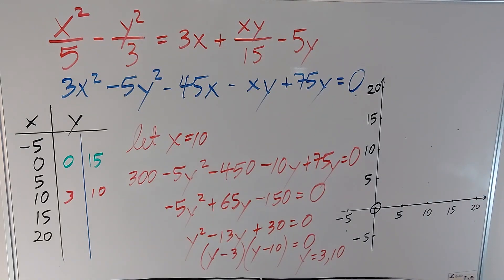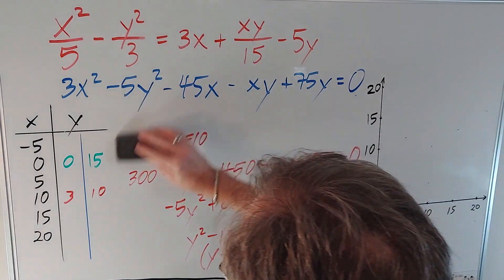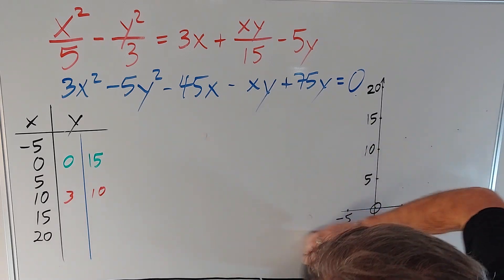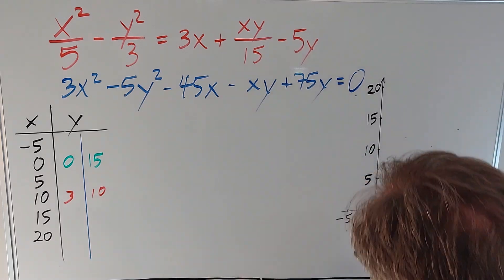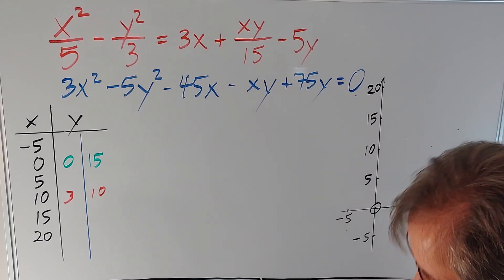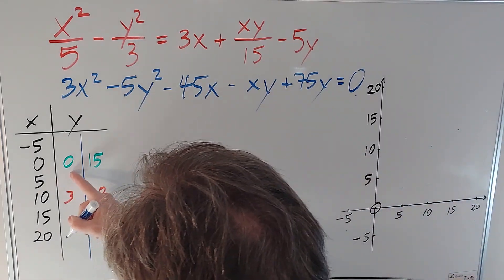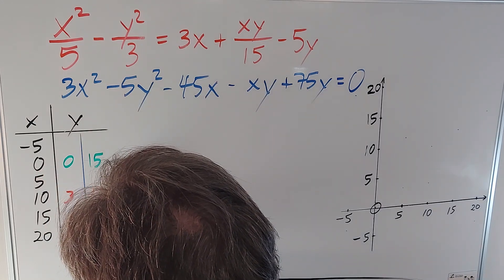Now to save time, let me just give you the other numbers. If I would have let y equal zero, I would get the x-intercepts. And by a similar calculation, they also turn out to be zero and 15. There's the zero one and the 15 one would be here.